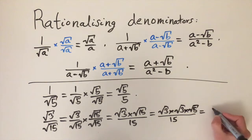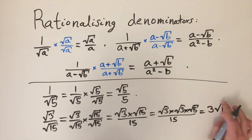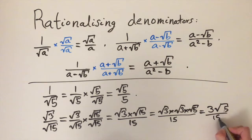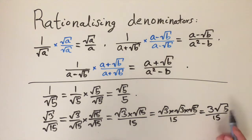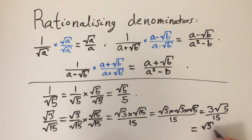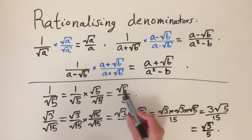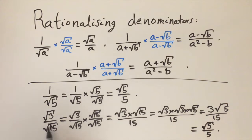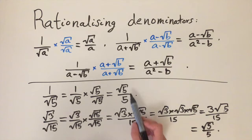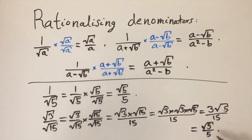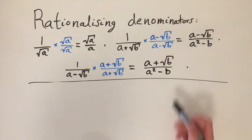The square root of 3 times the square root of 3 cancel out, giving us 3. So we have 3 times the square root of 5 divided by 15. Since 15 is 3 times 5, the 3s cancel out and we simplify to the square root of 5 divided by 5. So these two fractions are alternative forms but they share the same rationalized form: the square root of 5 divided by 5.